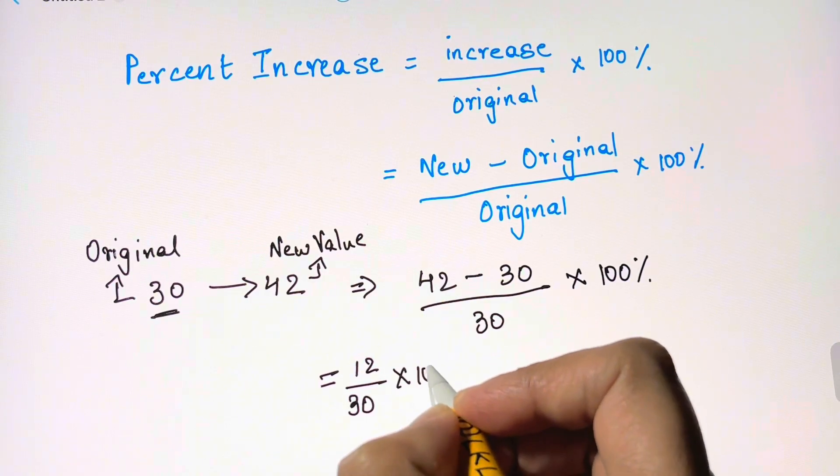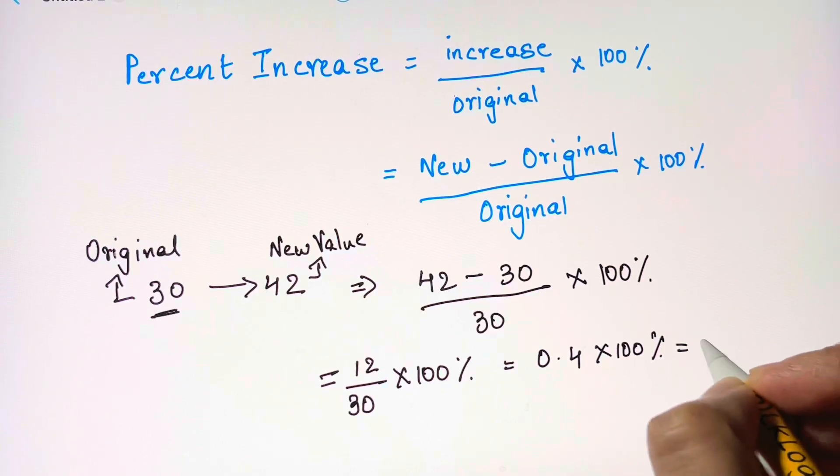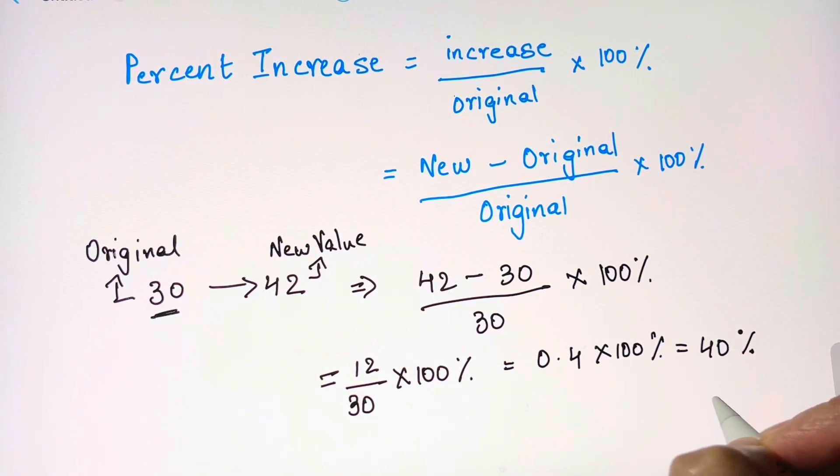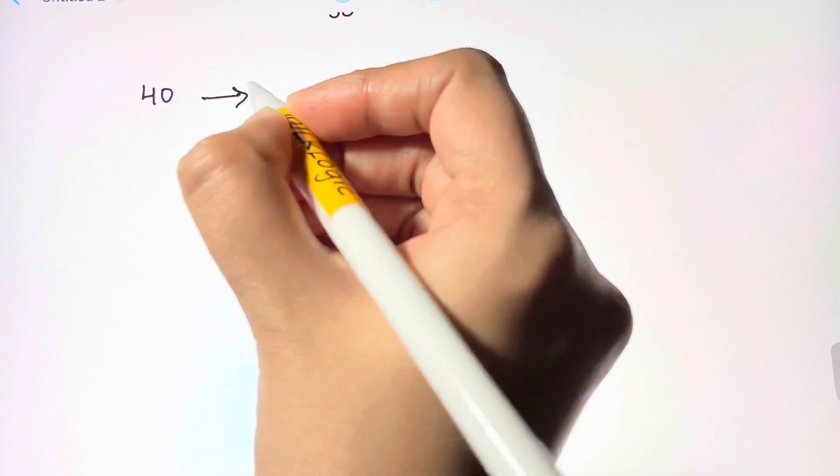12 over 30 is 0.4, and 0.4 times hundred is 40 percent. This is plus 40 percent, so plus represents the percent increase. Take another example, the value changes from 40 to 70.